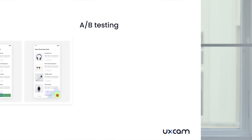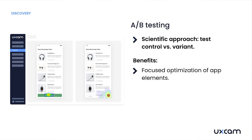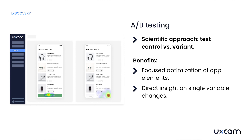A/B testing is like a scientific experiment of the app world. You have two versions — a control and a variant — and you monitor how a change of one variable affects user behavior. It's extremely focused and allows you to hone in on optimizing specific elements within your app, be it a call-to-action button or a new feature. However, A/B tests are limited in their scope — they look at the impact of isolated variables, and you can miss the big picture. They won't tell you, for instance, how multiple changes might interact or how a change influences the user experience holistically.